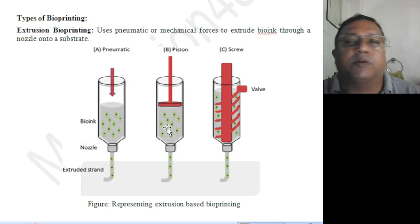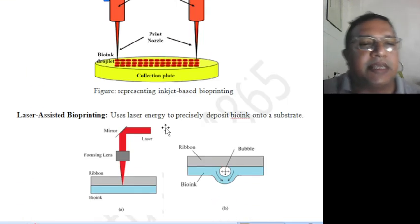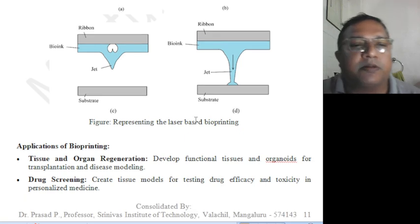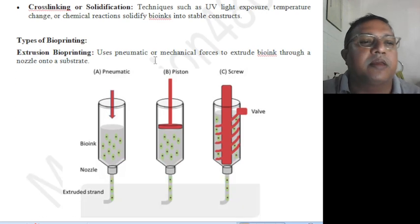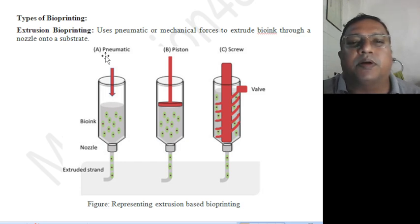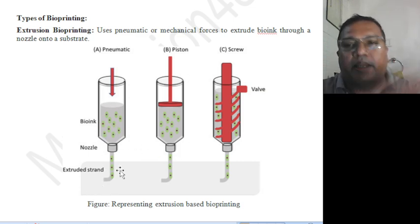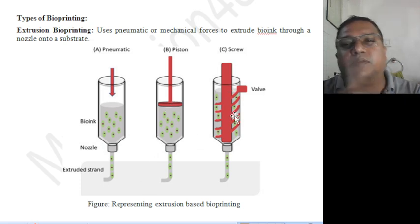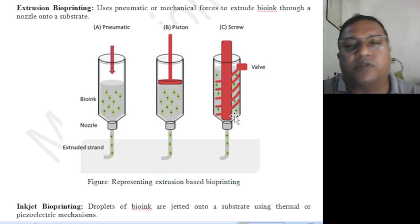Different types used in bioprinting include extrusion bioprinting, inkjet bioprinting, and laser-assisted bioprinting. Extrusion bioprinting uses pneumatic or mechanical force to extrude the bio-ink through a nozzle onto a substrate. Pneumatic printing works with gravitational force only; alternatively, a piston pushes the material, or a screw rotation forces the material down in a pressurized way. These are the different extrusion methods available.